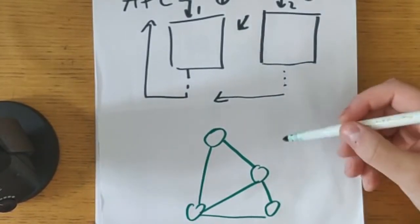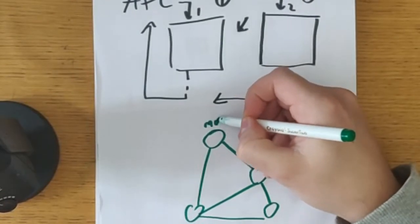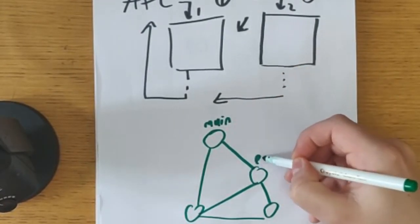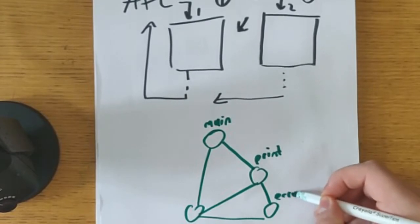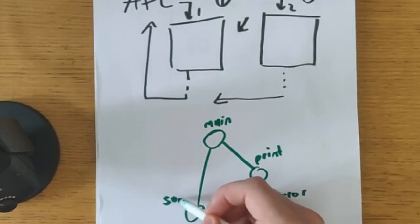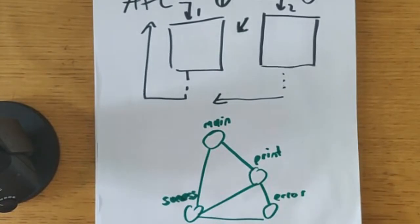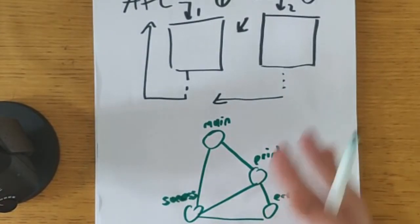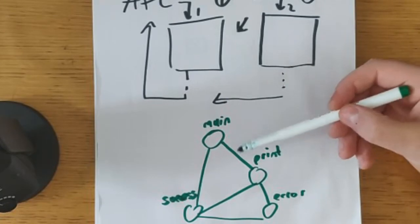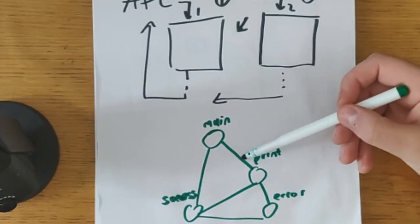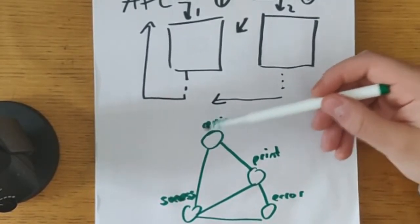This can represent program flow — a main function, a print function, an error function, a success function. If you've ever seen how something disassembles, you get these blocks. You've got your edges or paths or connections, and you've got your vertexes or nodes.